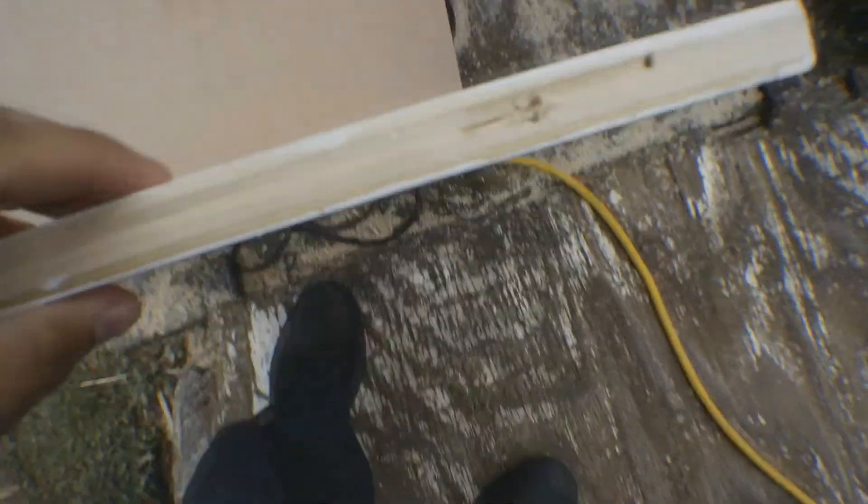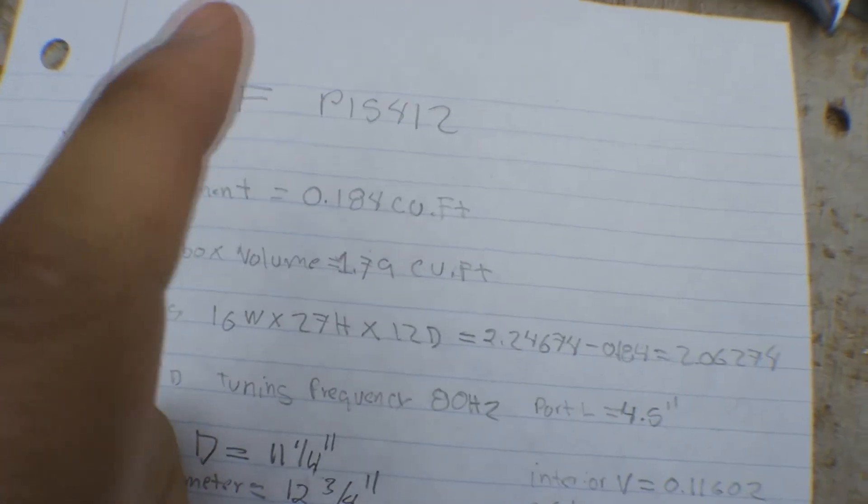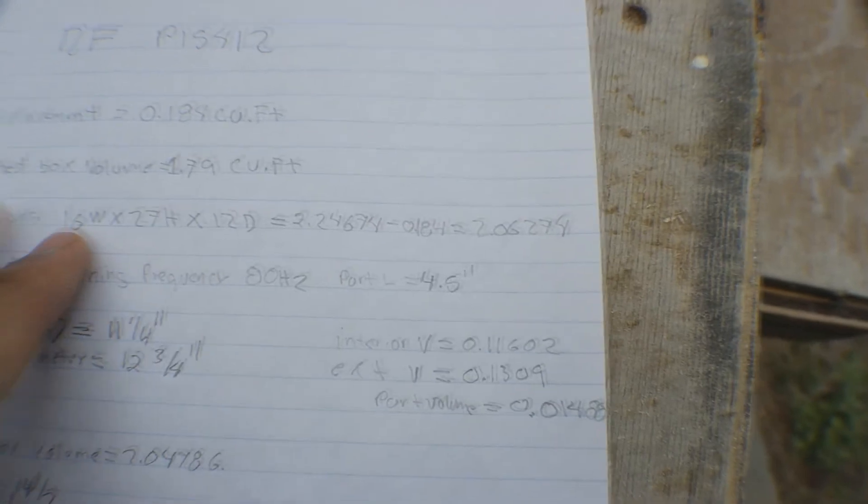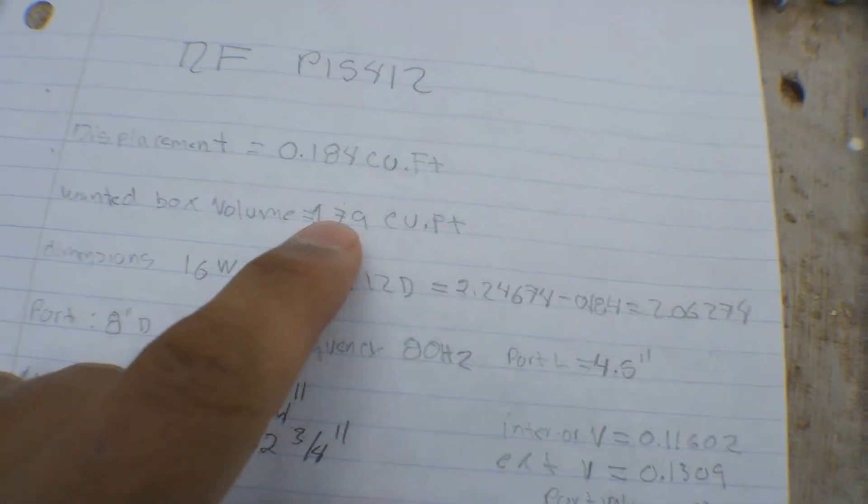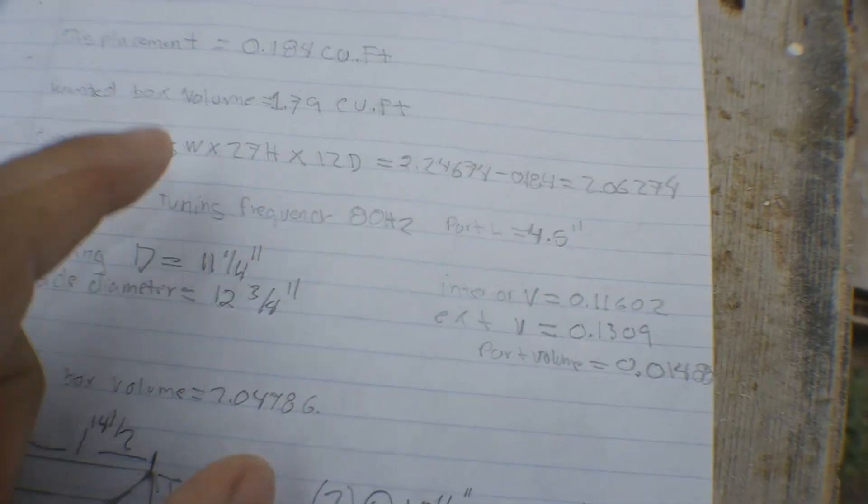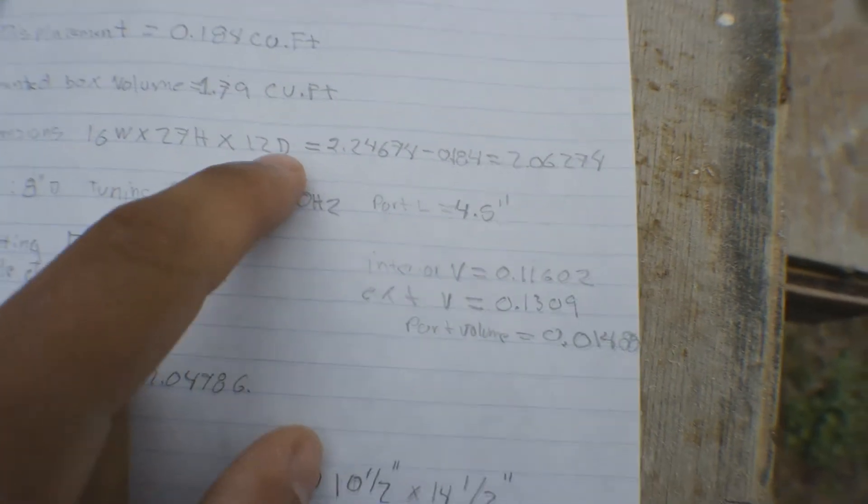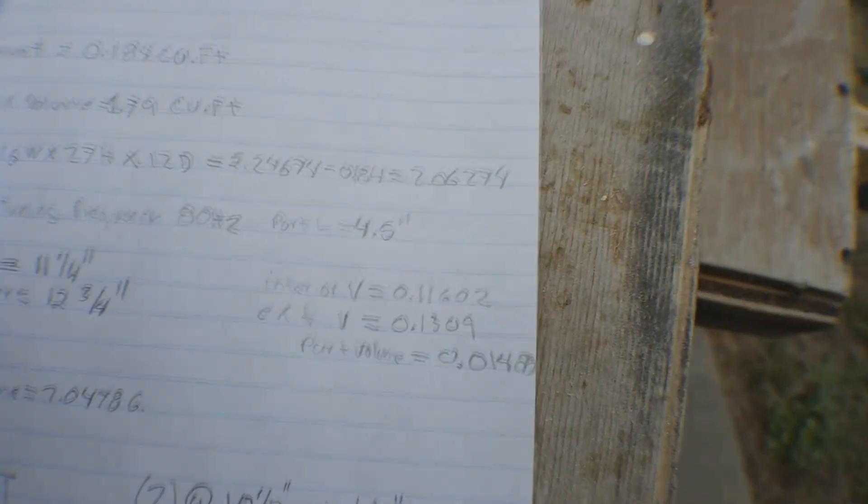The project today is for a Rockford Fosgate P1 that I had laying around for a while. Got all my specs: displacement of the sub is 0.184 cubic feet, the box volume recommended by the manufacturer is 1.79. The dimensions I came up with are 16 by 27 by 12, which gives me a 2.24 cubic feet box volume. Internal box volume, I subtract the displacement and I get 2.06274.